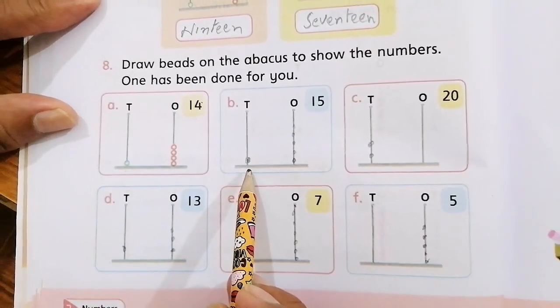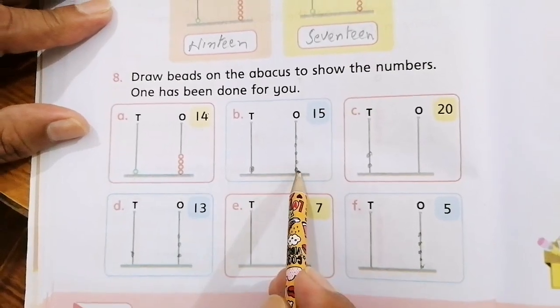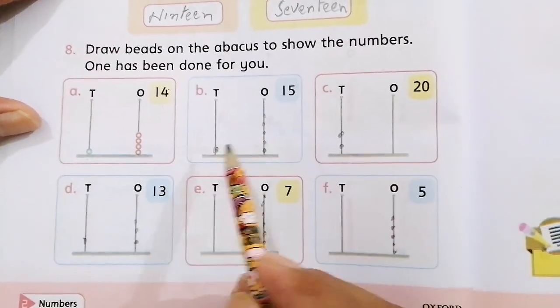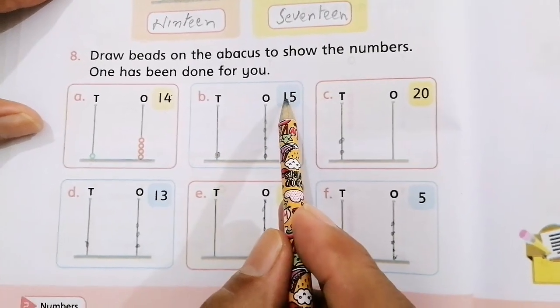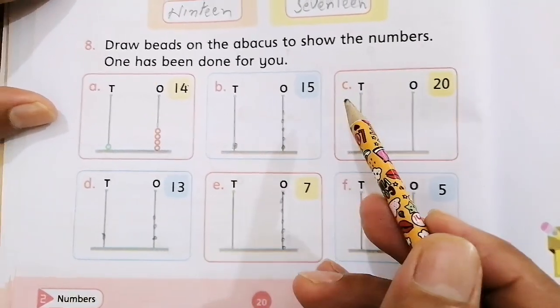Here is one bead. Here we have to place the beads. So on the right side, tens place 1, ones place 5, so 15.